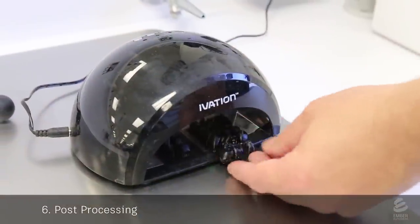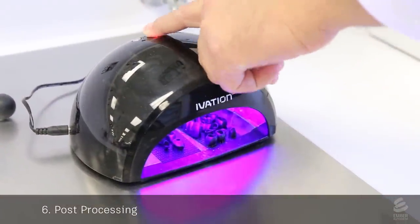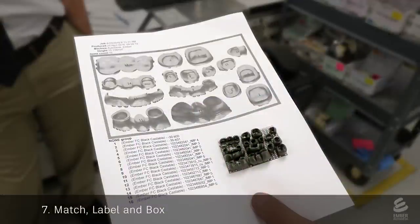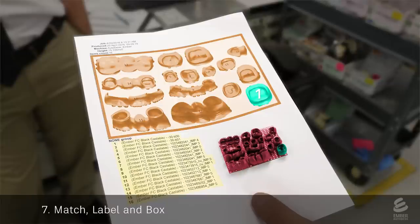Then the print goes through a post-curing step under a UV lamp. Because the print can have multiple crowns from multiple patients, they create a sheet for each print. The sheet has an image that matches each crown and coping on the print with a specific patient. For example, the image labels crowns number 1, 2, and 3, which match these crowns on the print and these cases for a patient.